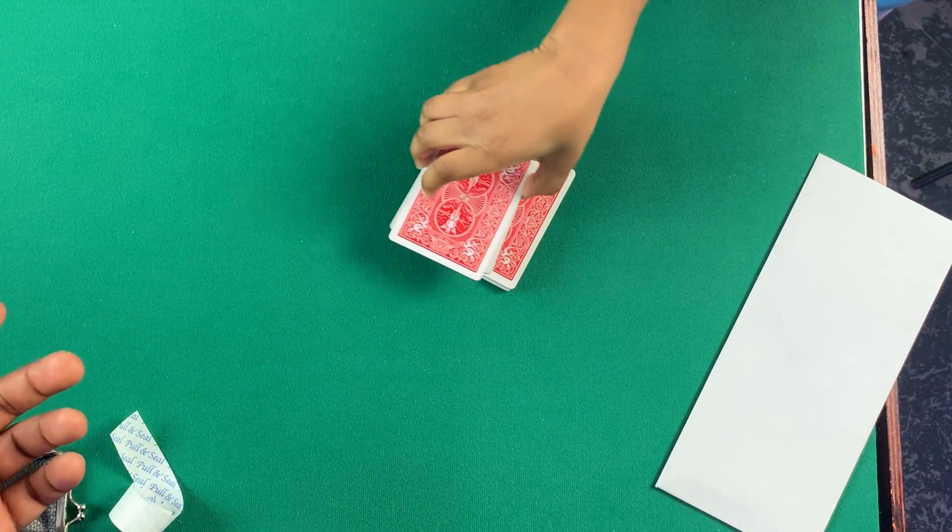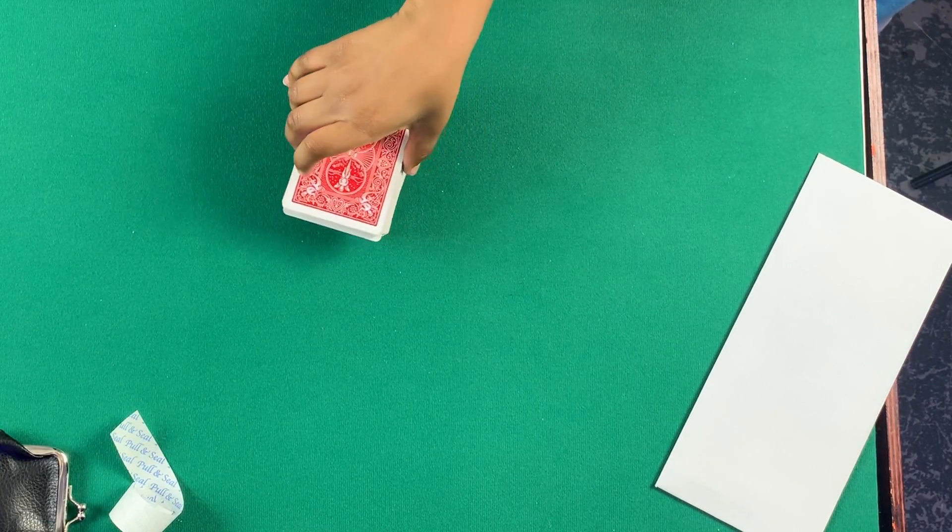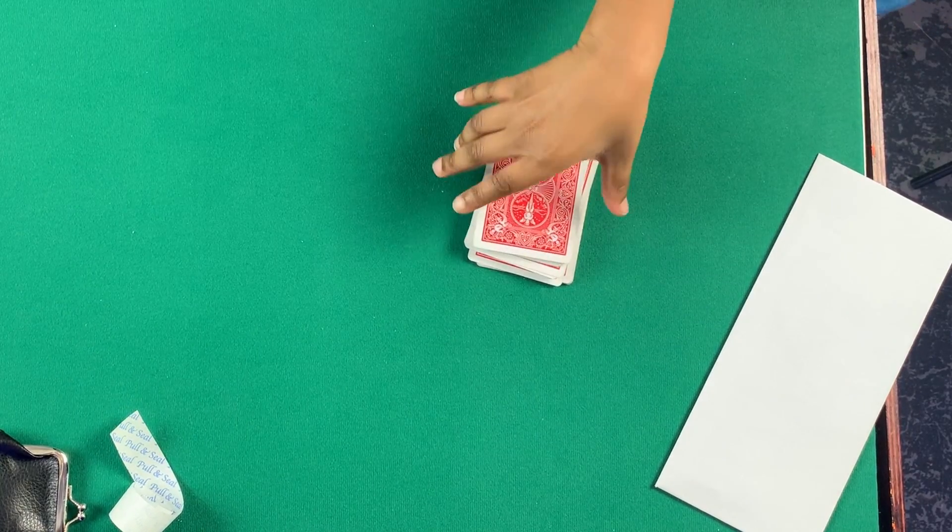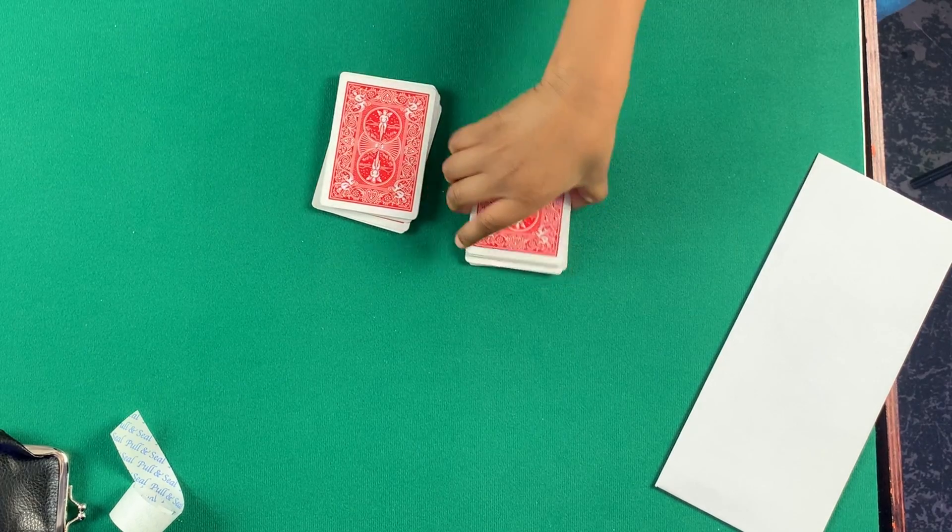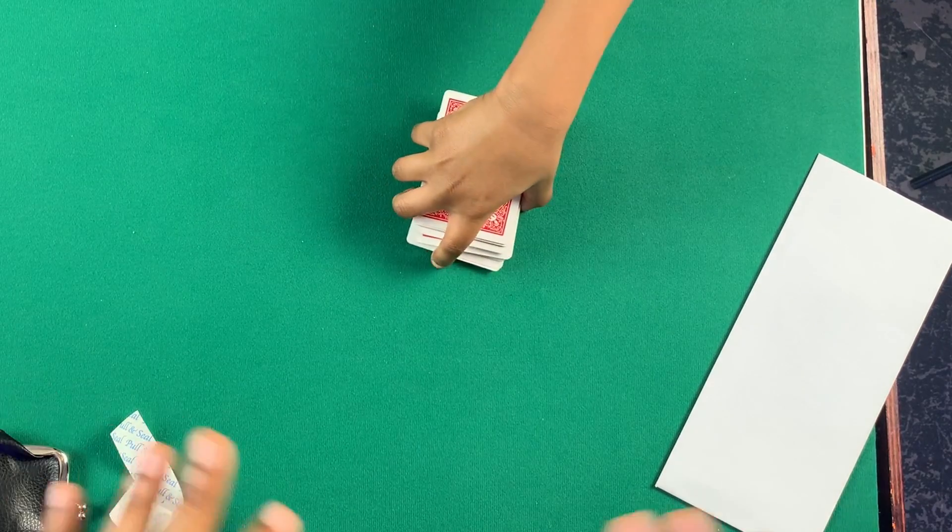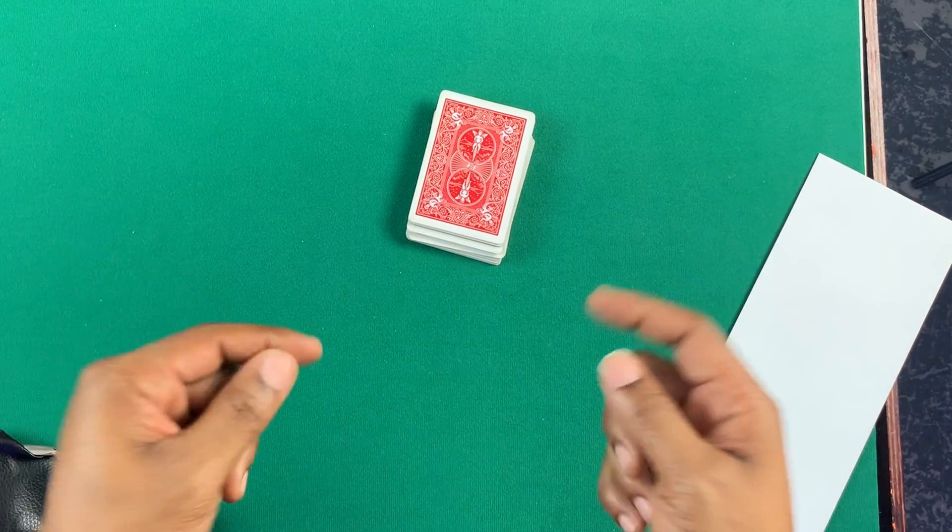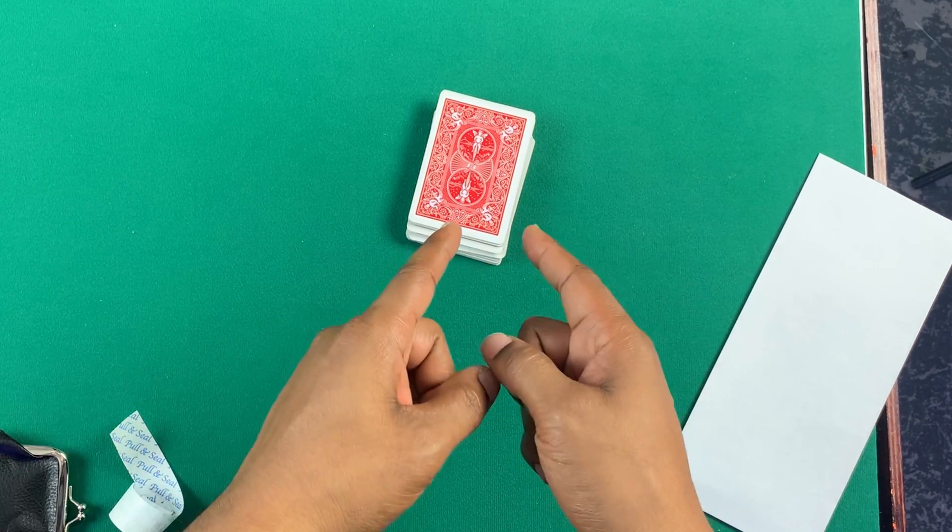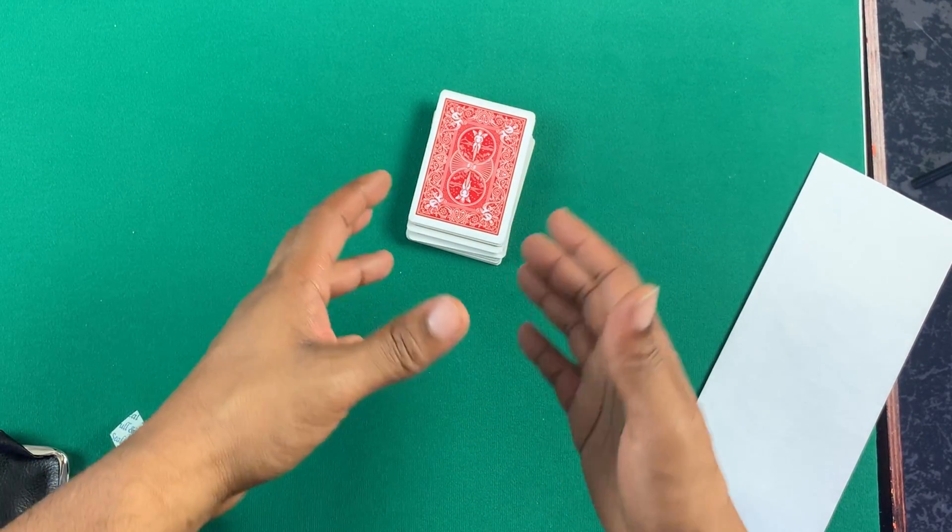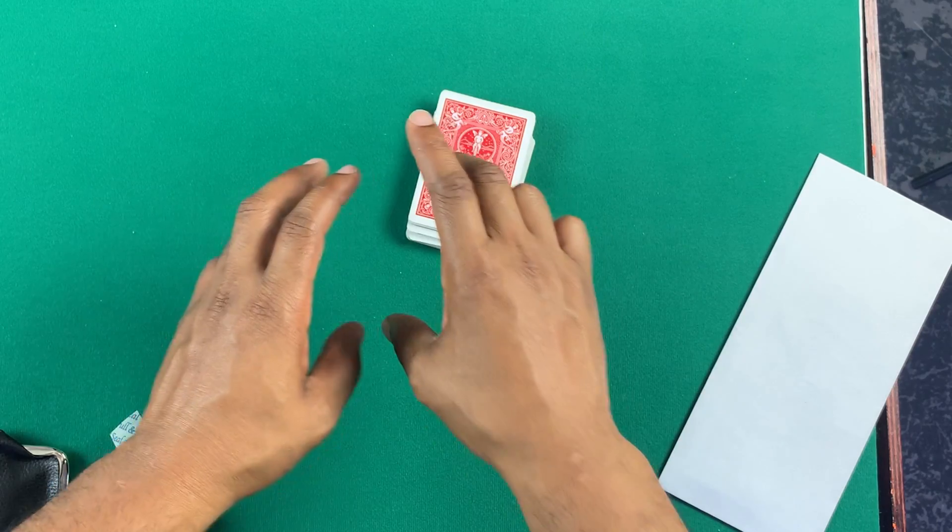And then at this point, after you've shown all the cards are different, you want to allow the spectator to cut the card. So, I'm going to have the spectator cut the cards as many times as they want. It doesn't matter because you're going to force which card they're going to cut to, but they don't know that. So, now that they've cut it, once they're satisfied with it, you don't want to touch the deck at all. That's what makes this a miracle. Okay?